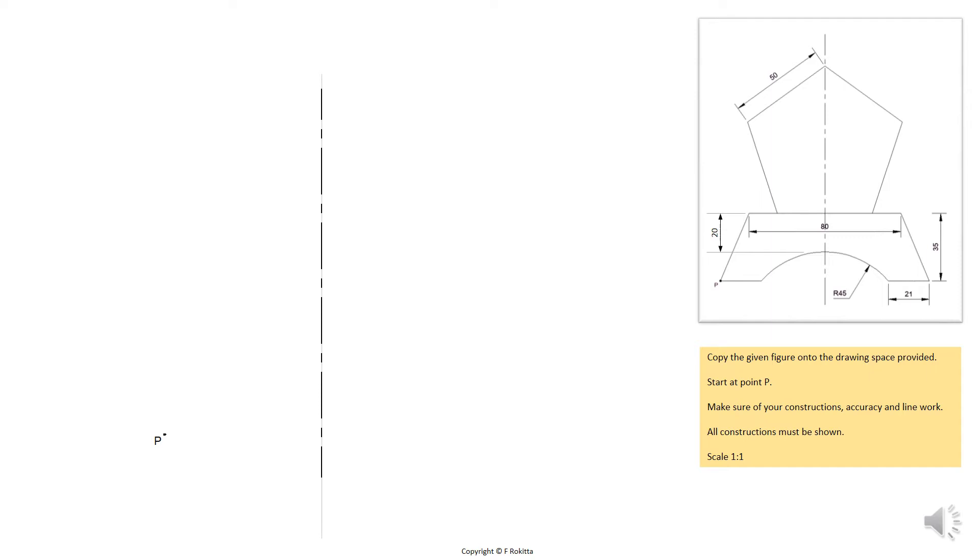On your left hand side you will find the drawing space. There is provided to you a starting point P as mentioned in the question. To the right of that is the vertical centre line that you need to use in your drawing.